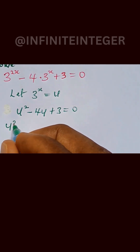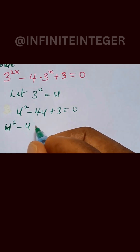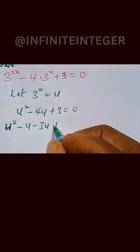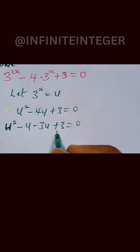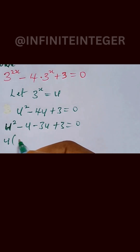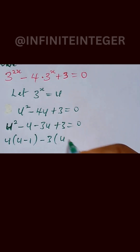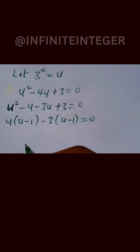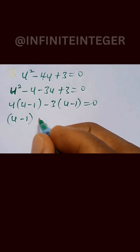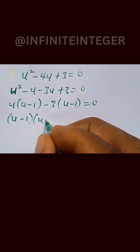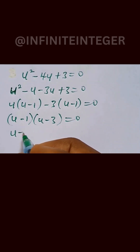We have u raised to power 2 minus u minus 3u plus 3 equals 0. Factorizing this expression, we have u into bracket (u minus 1) minus 3 into bracket (u minus 1) equals 0, which gives us (u minus 1) multiplied by (u minus 3) equals 0.